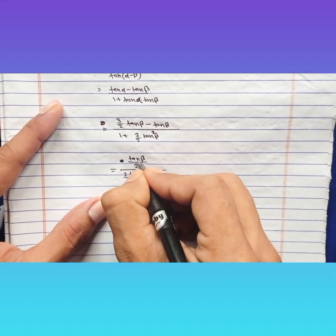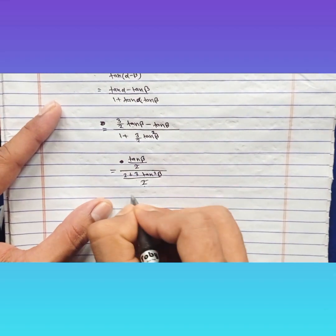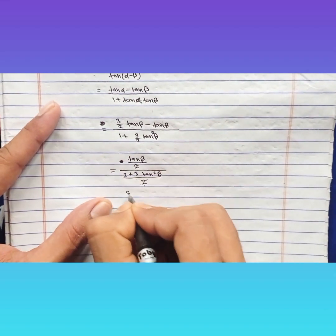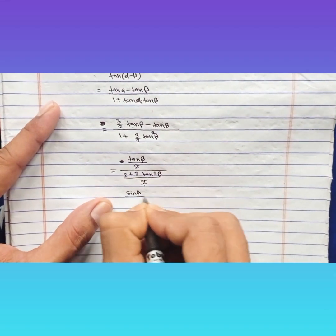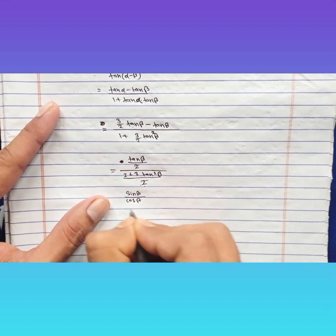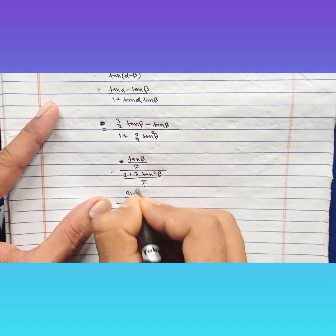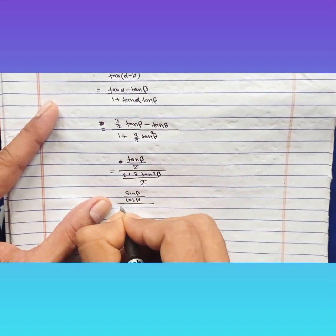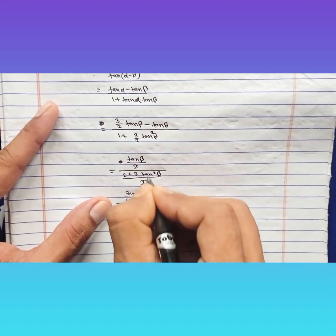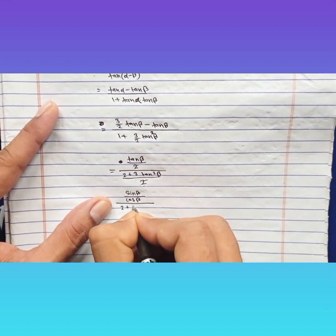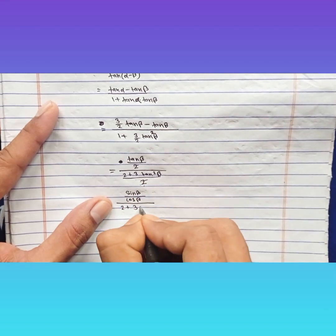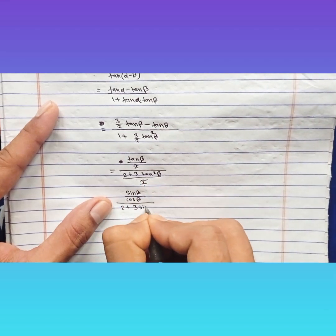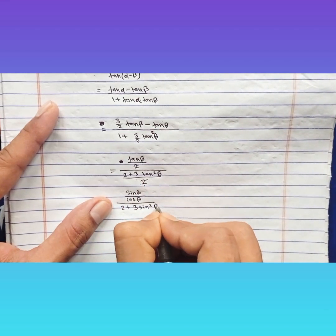tan β becomes sin β upon cos β, and tan² β becomes sin² β upon cos² β. So the expression becomes (sin β / cos β) upon 2 plus 3 sin² β over cos² β.